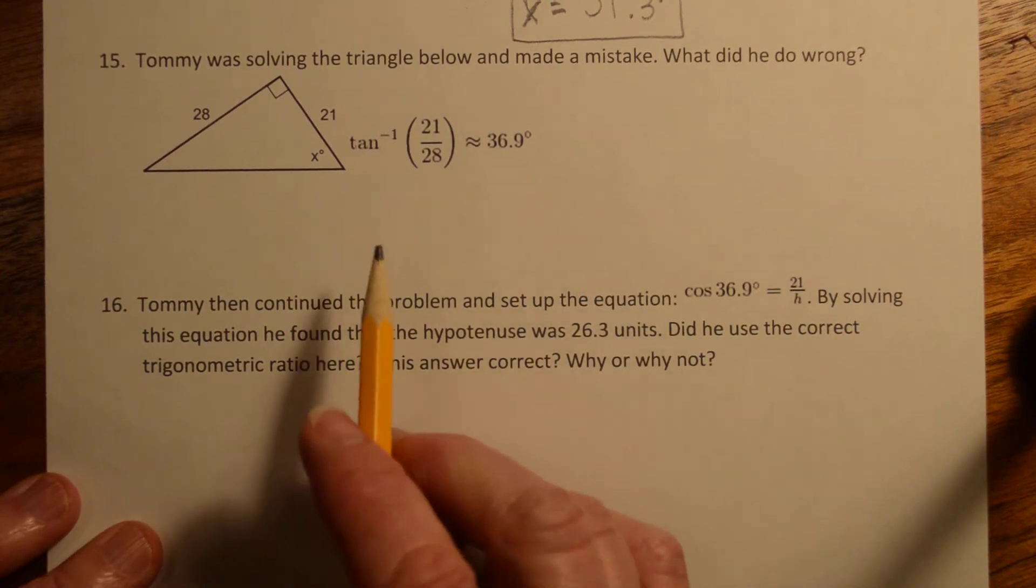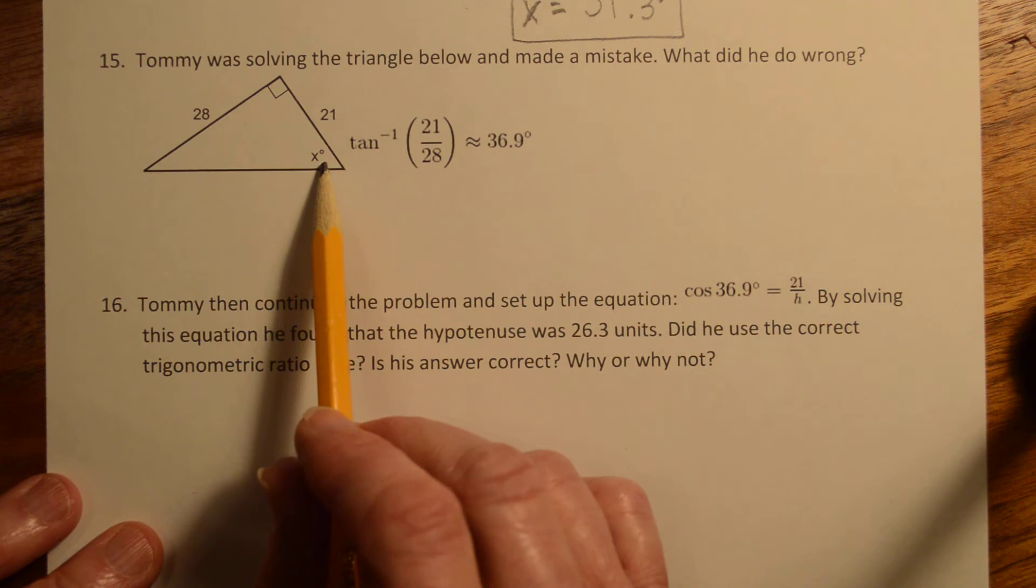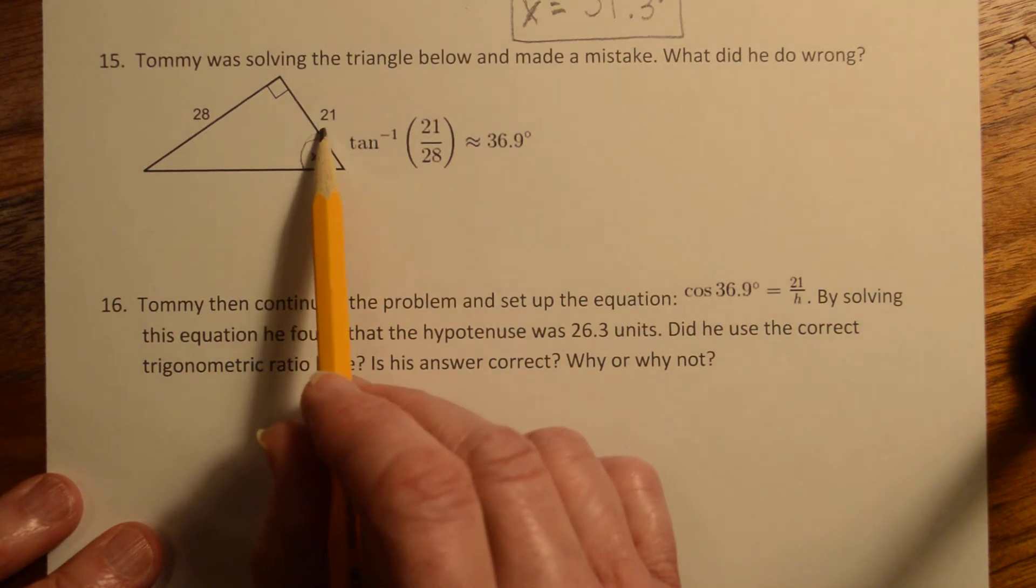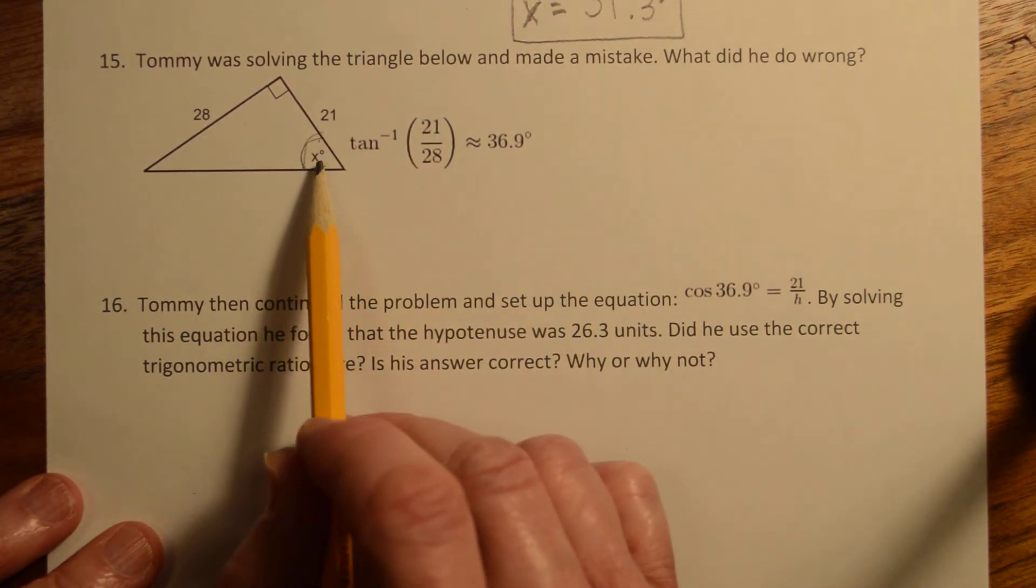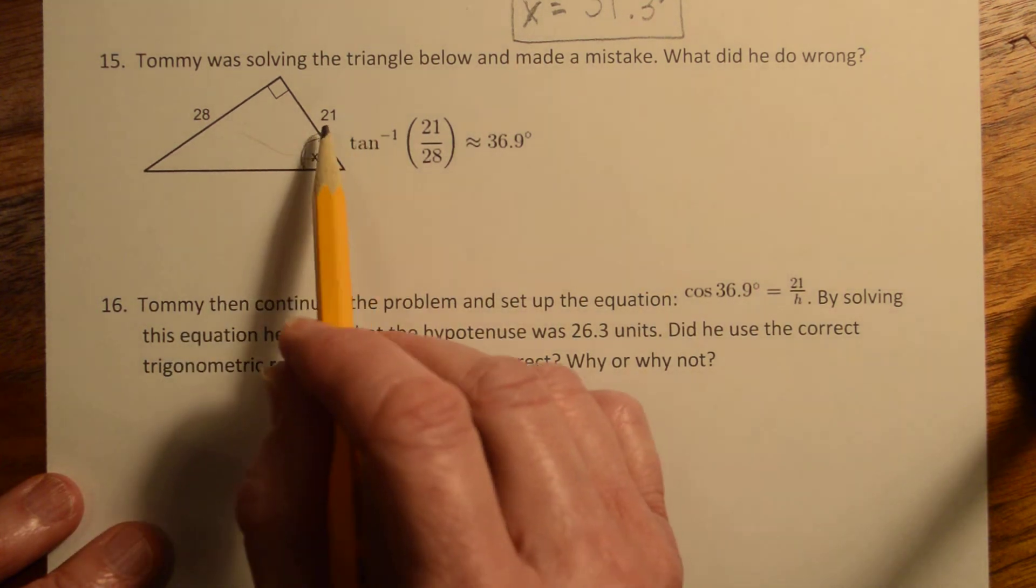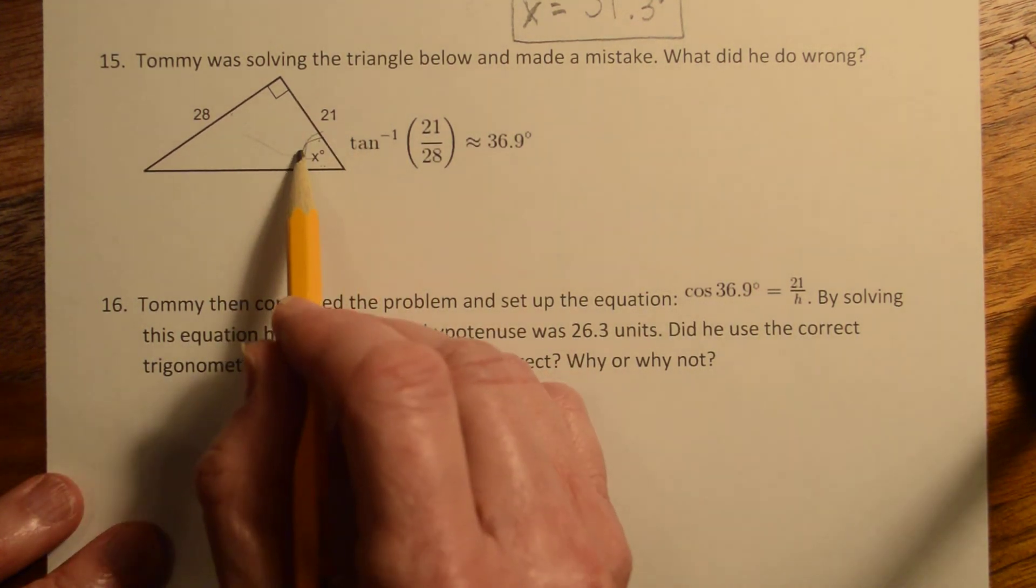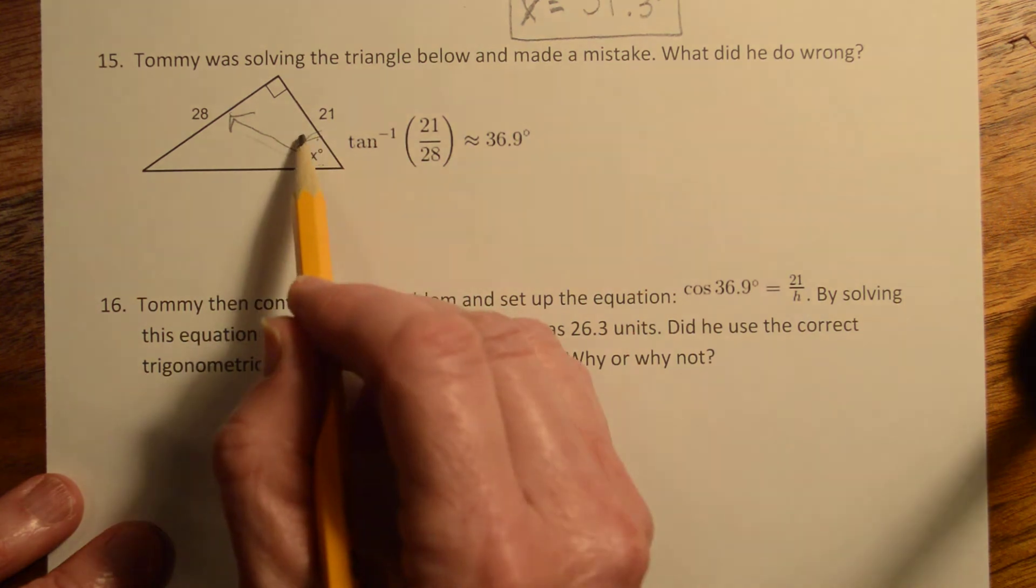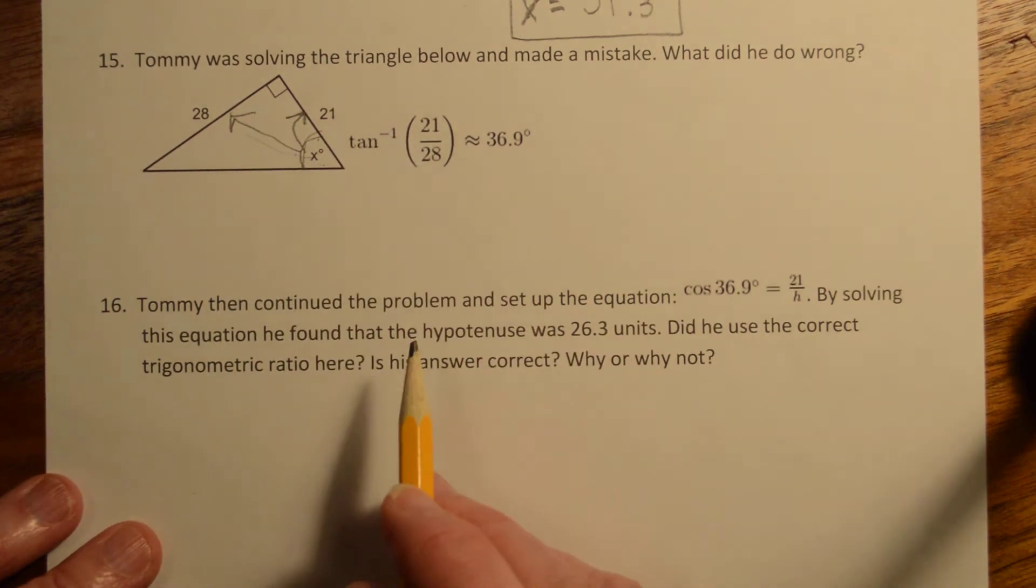Okay, so welcome back. What he did wrong was this is our angle of reference right here and tangent is opposite over adjacent. What he did was he did adjacent over opposite. He should first have put this in the numerator, the opposite, and then this in the denominator.